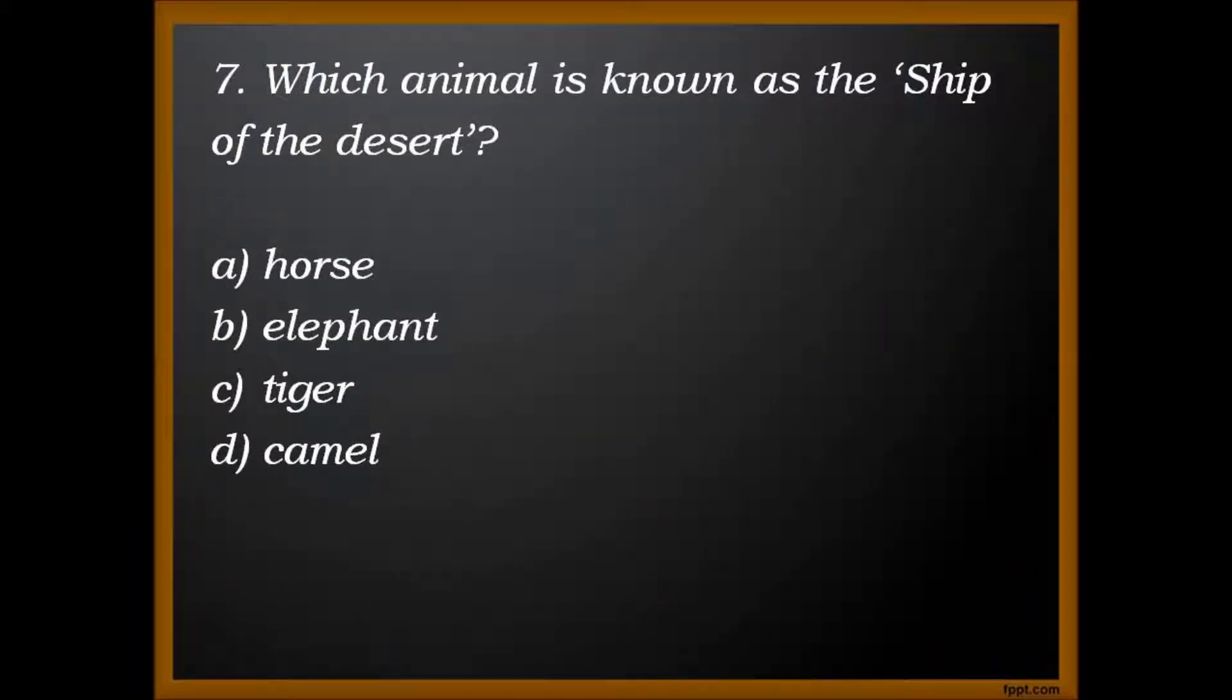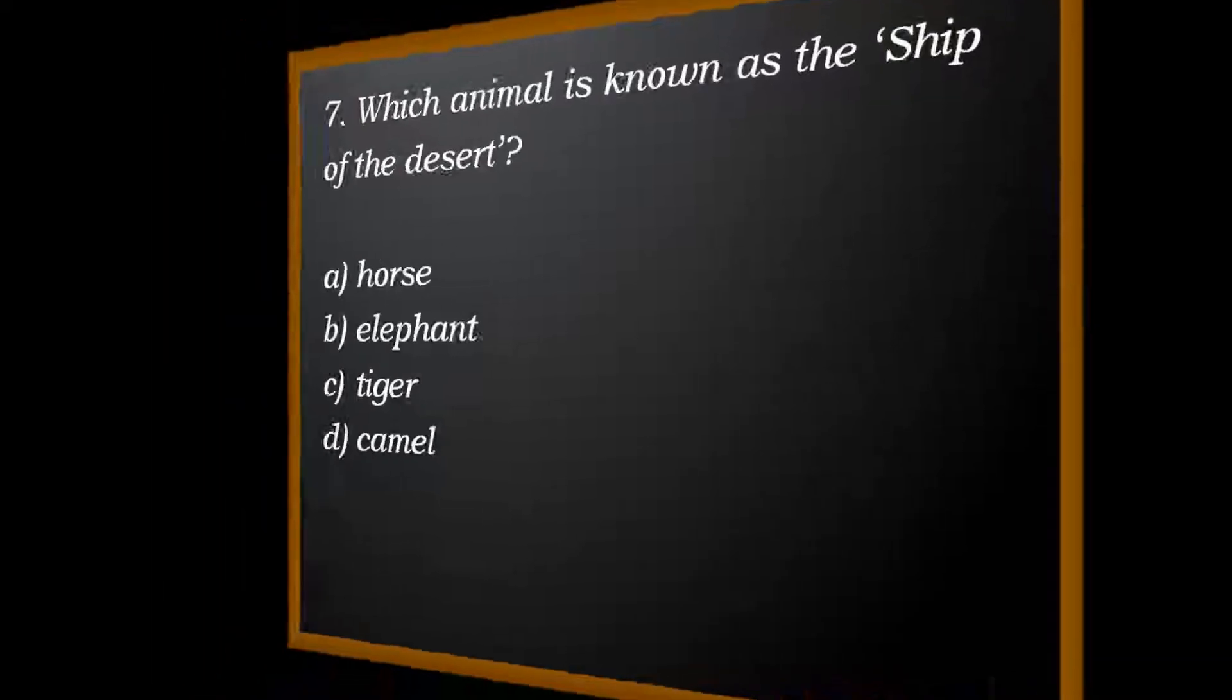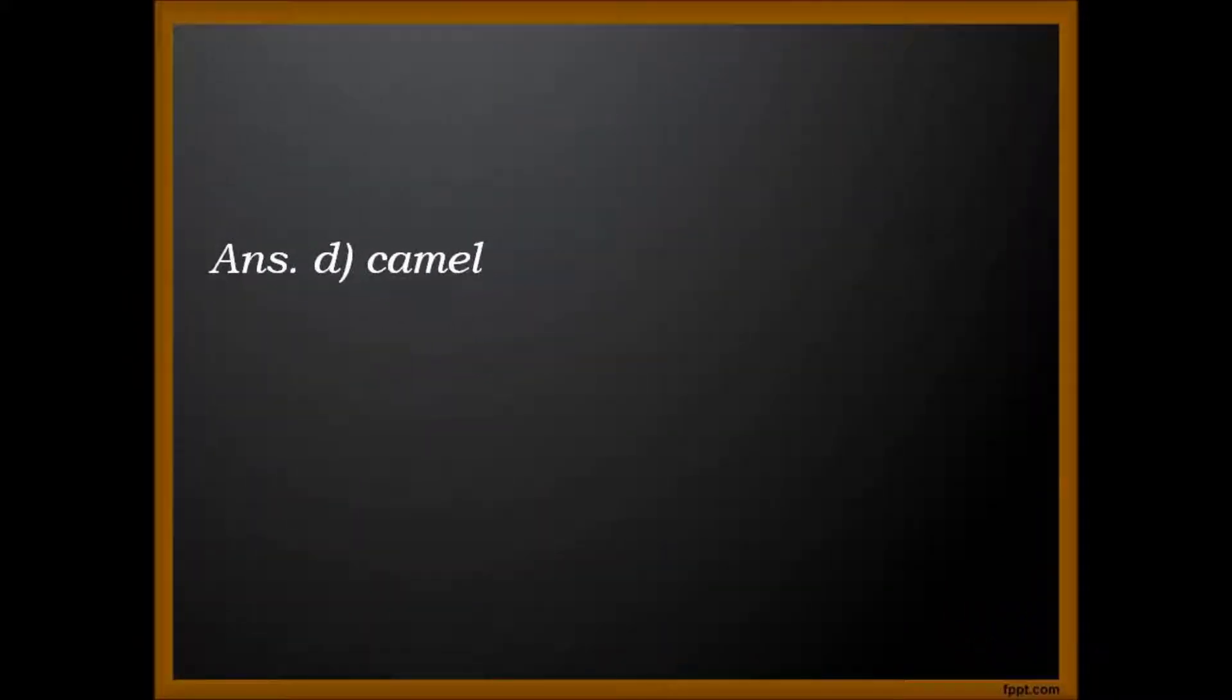Now the next question. Which animal is known as the ship of the desert? A. Horse. B. Elephant. C. Tiger. And D. Camel. Answer. D. Camel.